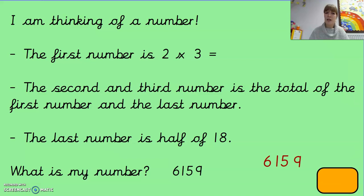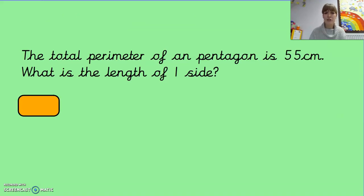Another question you might find is the total perimeter of a pentagon is 55 centimetres. What is the length of one side? So we know a pentagon is a five-sided shape, isn't it? It's a bit five there. Okay, so I know it's a five-sided shape.